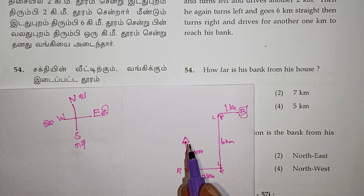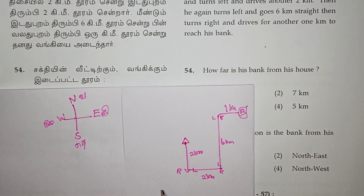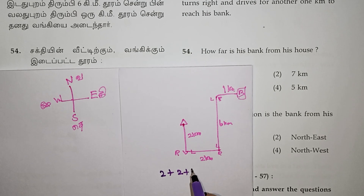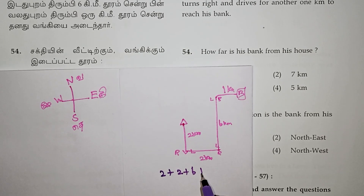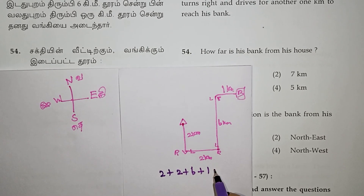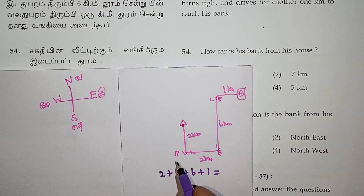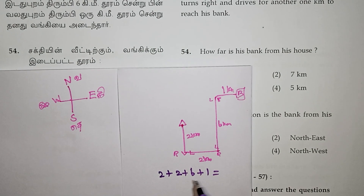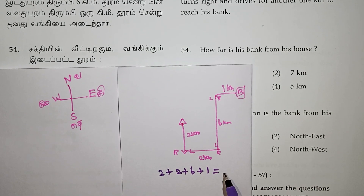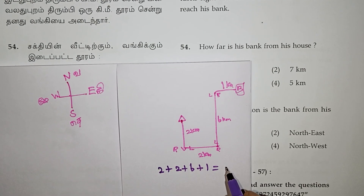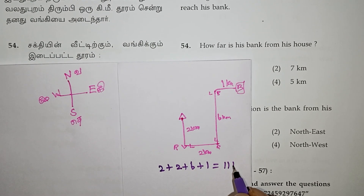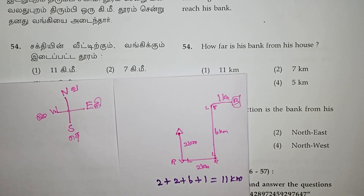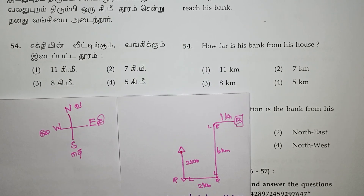First, it is 2km, 2km, 6km, 1km. So you can see the addition is 11km. 11km is the correct option — you can see the first option.